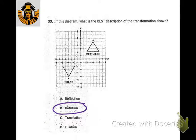When we go from the preimage to the image, you can tell this is a rotation that would do the trick — it looks like a 180-degree rotation.